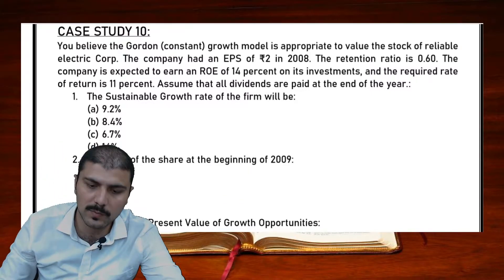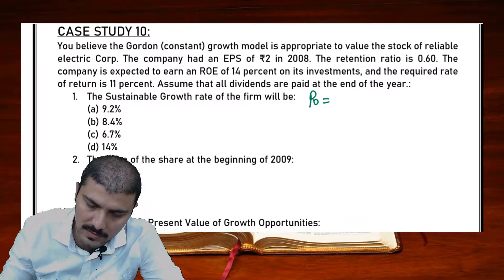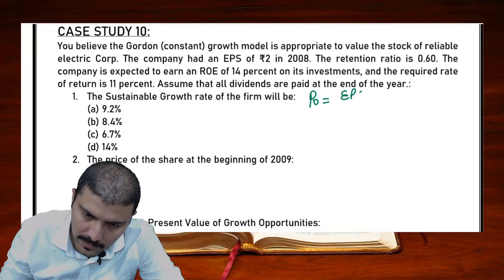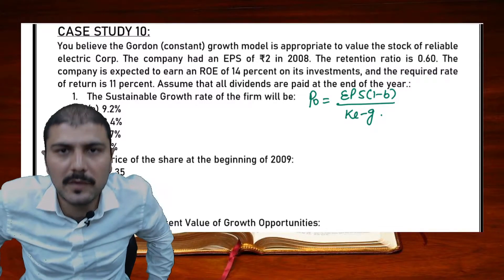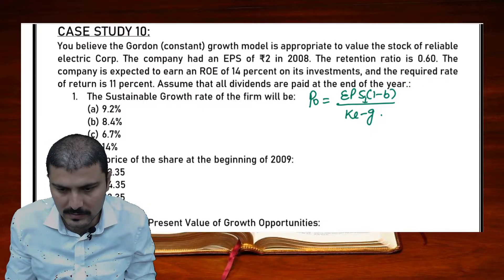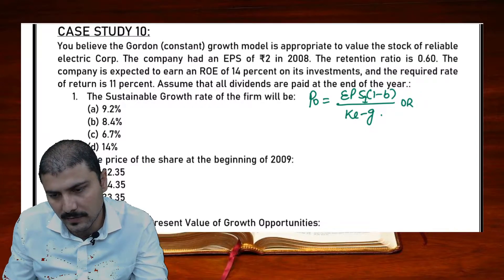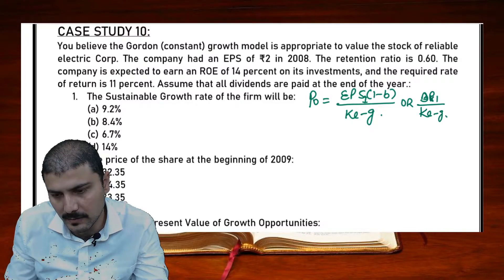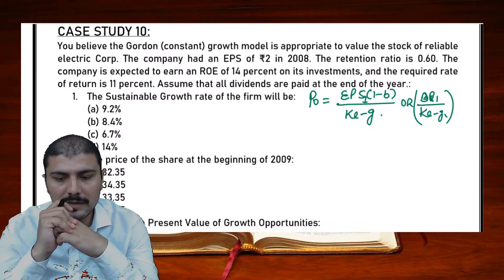The Gordon Growth Model values the share as: Price at year 0 = EPS × (1 − b) divided by (ke − g), which represents a perpetual value. This is essentially EPS of year 1, or sometimes written as DPS₁ divided by (ke − g). Both forms represent the same formula.